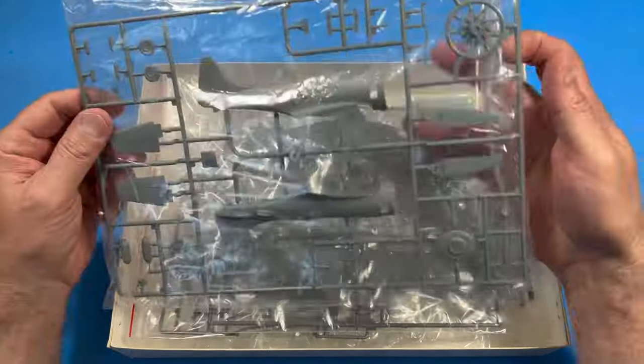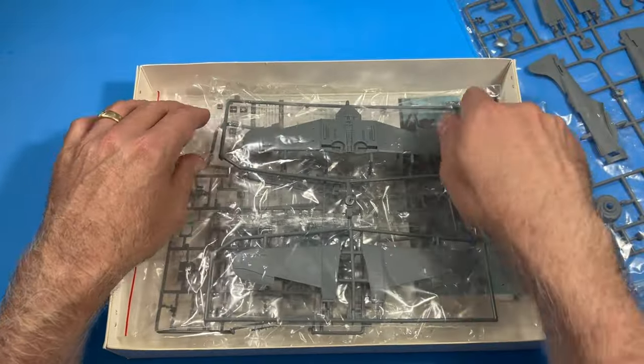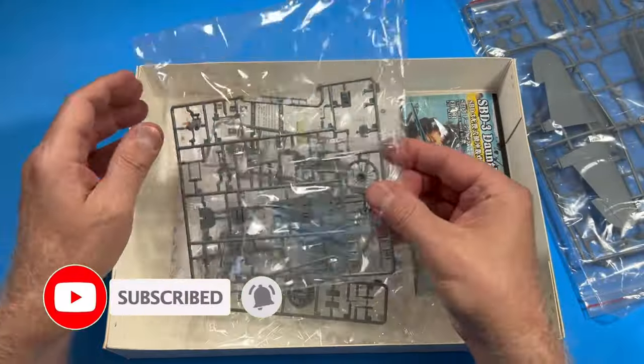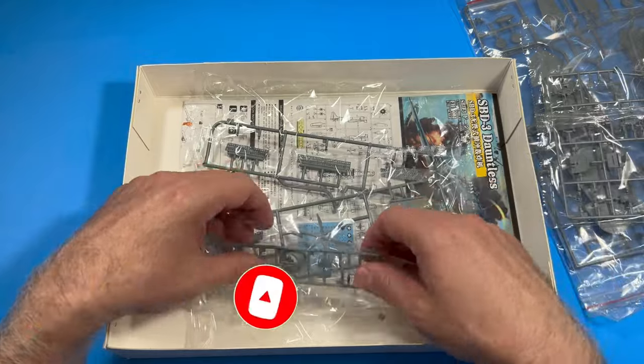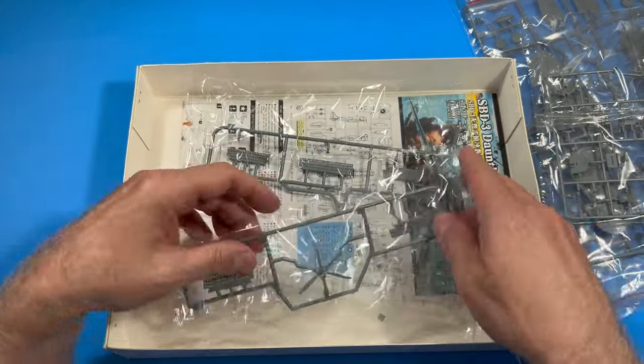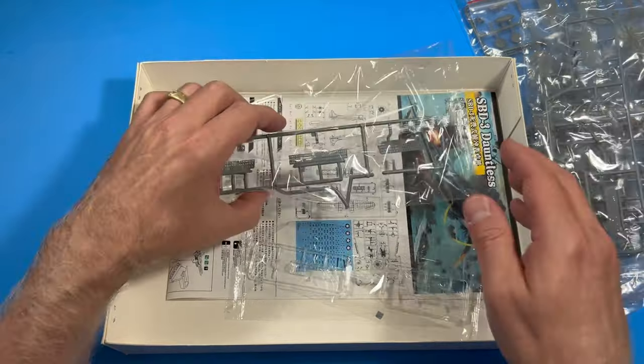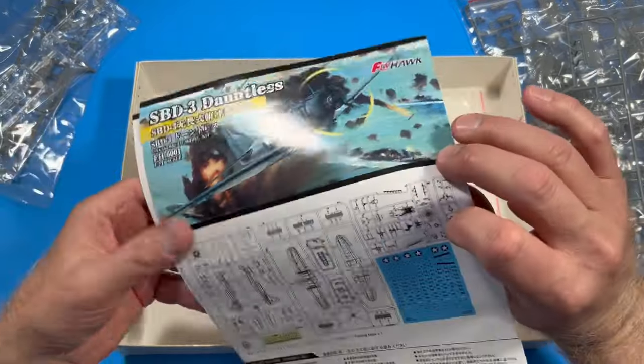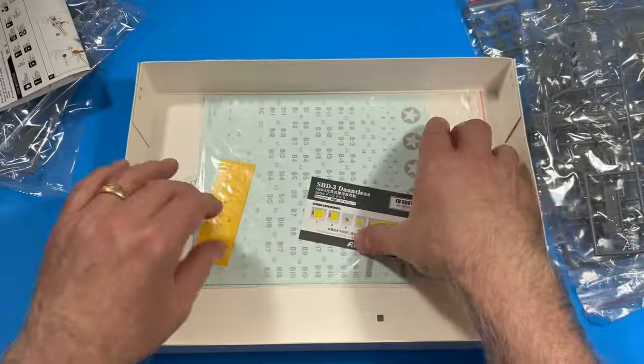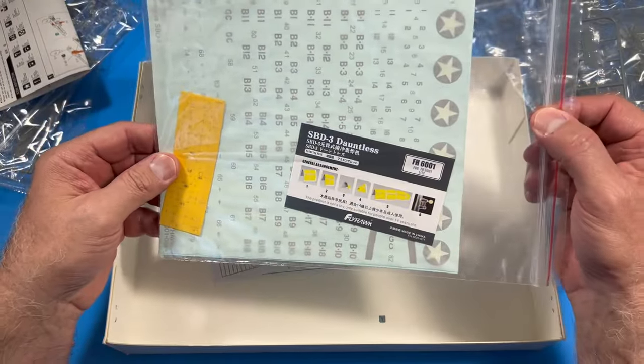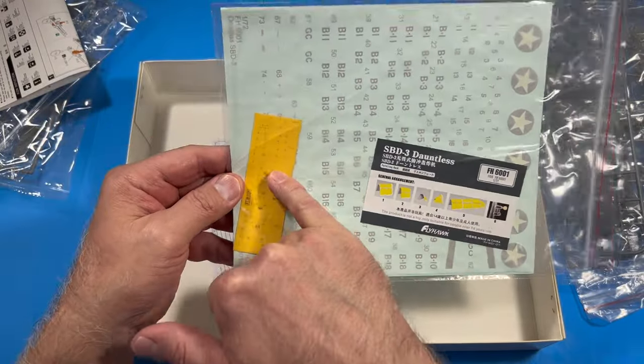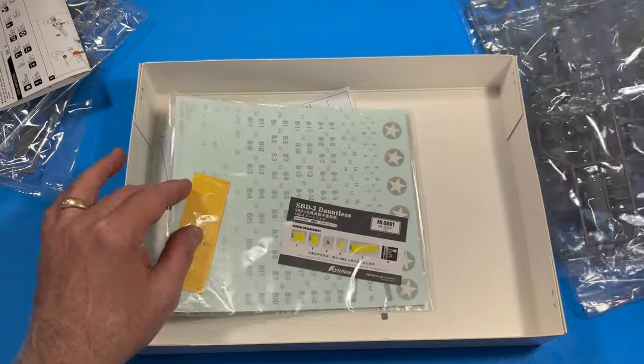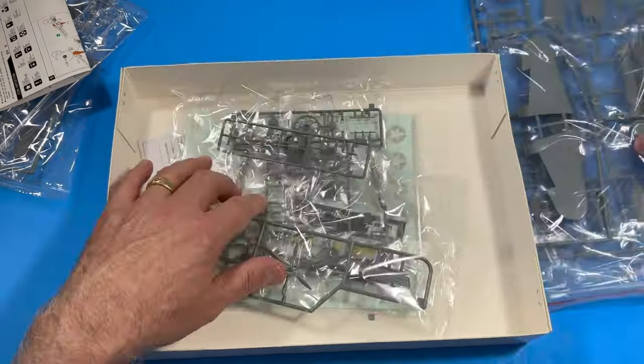So we have one bag here. Looks like the fuselage parts. We're going to look at these in detail and take a look and see what the detail looks like on this kit. Another sprue. Another one. That's number three. There's a smaller sprue here. Another one. And a little sprue here. You've got your clear parts. We've got the instructions. It's very colorful. And then we have our decals. And it looks like we're going to get some paint masks. So that's kind of cool. And then some other just boilerplate warnings.